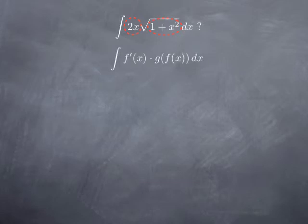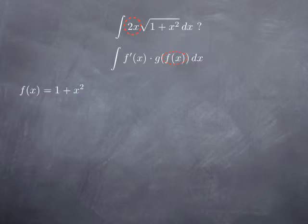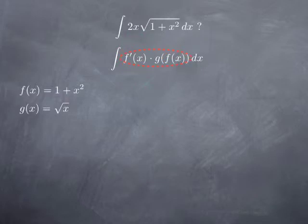So it looks like we have the derivative of a function f, and then that function f plugged into another function. That's f prime multiplied by g of f of x. In our case, f of x is 1 plus x squared, so f prime is 2x. The function g is the square root, and we are looking for the antiderivative of f prime multiplied by g of f of x. That should remind you of something we have seen before.